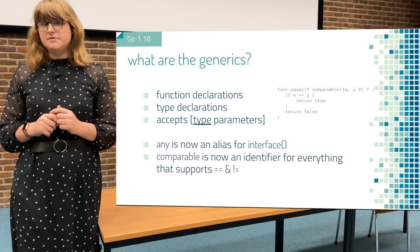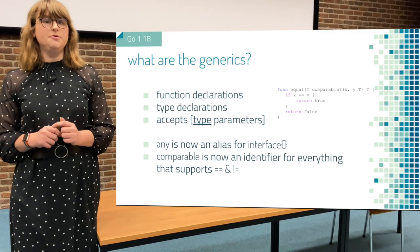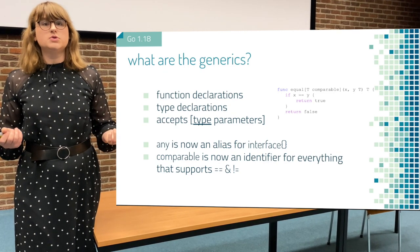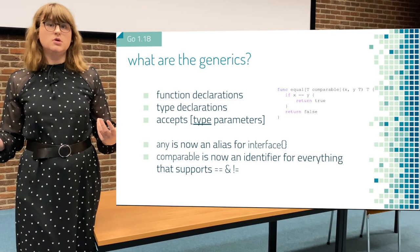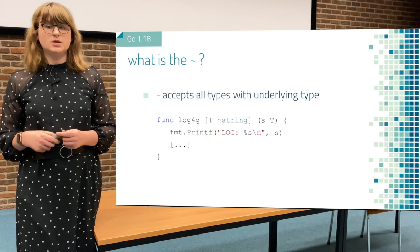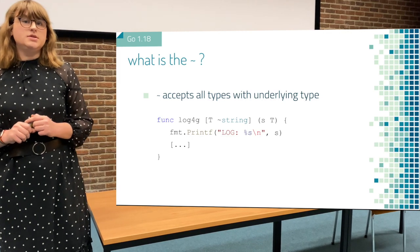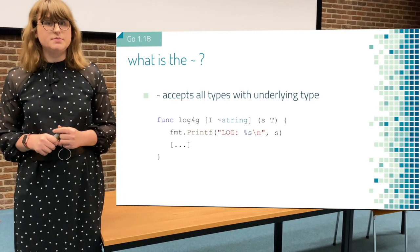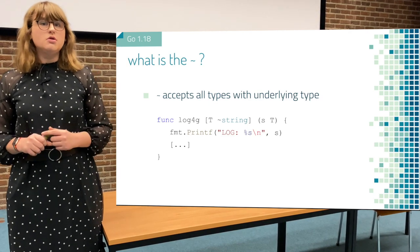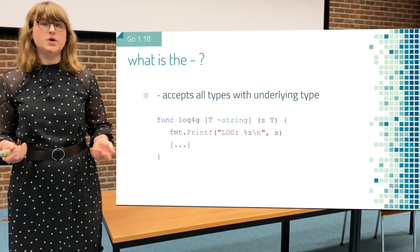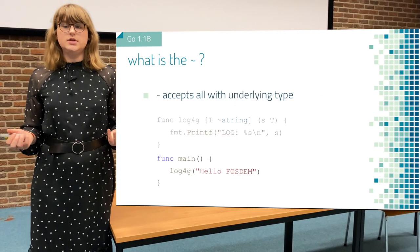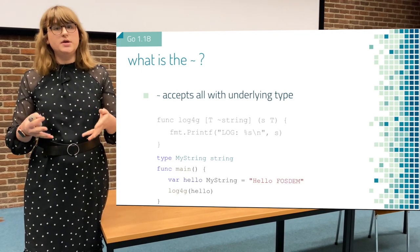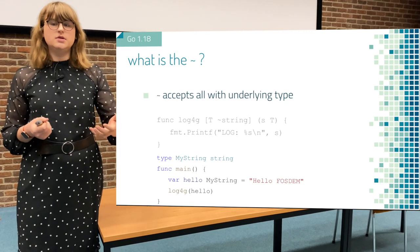We also now have a new alias for the empty interface — you can now just write the simple English word 'any'. We also have a new identifier called 'comparable'. Comparable allows you to compare any data type that is comparable using equal or not equal. There is also the tilde, which we see in many places in examples and documentation. The tilde accepts any type with this as an underlying data type. So, writing a log4go logger which logs anything related to a string — anything with a string as an underlying data type — I can still log my normal everyday string 'hello FOSDEM', but I can also log my own custom string type, as long as it has that underlying data type.